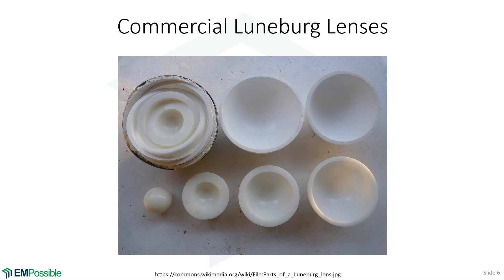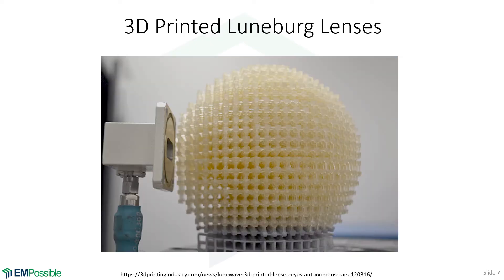You can buy Luneberg lenses, and here's what they look like: they are concentric rings of different ceramics. The ceramic has a permittivity of two or something close to that at the center, and works out to as low as possible toward the edge. That's why the material is flaking away at the edge — it becomes a foam, which is very fragile, because they're trying to get a permittivity close to one. In more recent days with 3D printing, we can 3D print Luneberg lenses that have a smoother profile than the discrete lens, and there's lots of success going on this way.